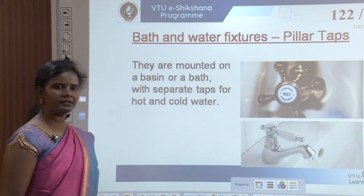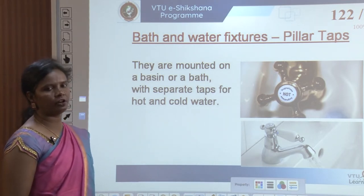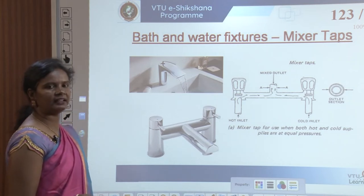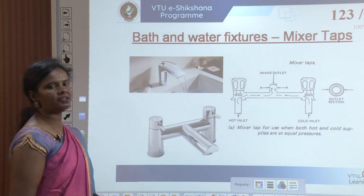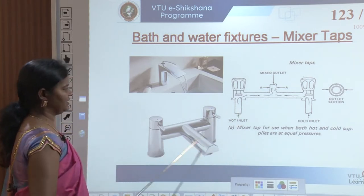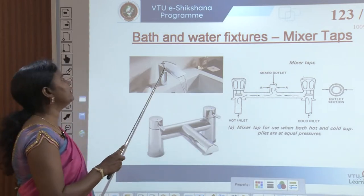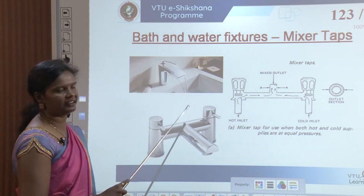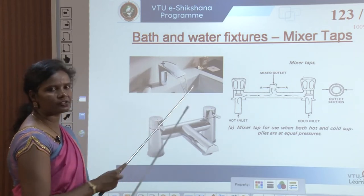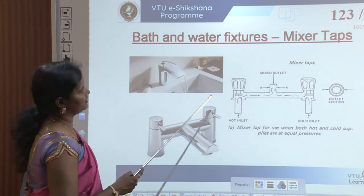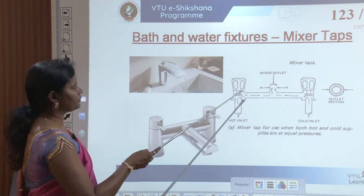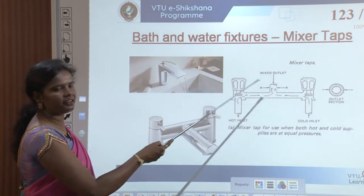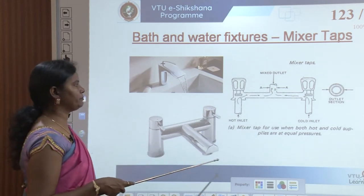Pillar taps are mounted on a basin or bath with separate taps for hot and cold water, or they can be a mixer. Mixer taps have two knobs — one for hot water and one for cold water — or it could be a single tap where the water is mixed internally in the pipe. The movement of the lever tells you the direction and quantity to be mixed. There are two inlets — cold water and hot water — and the mixed outlet comes from the tap.